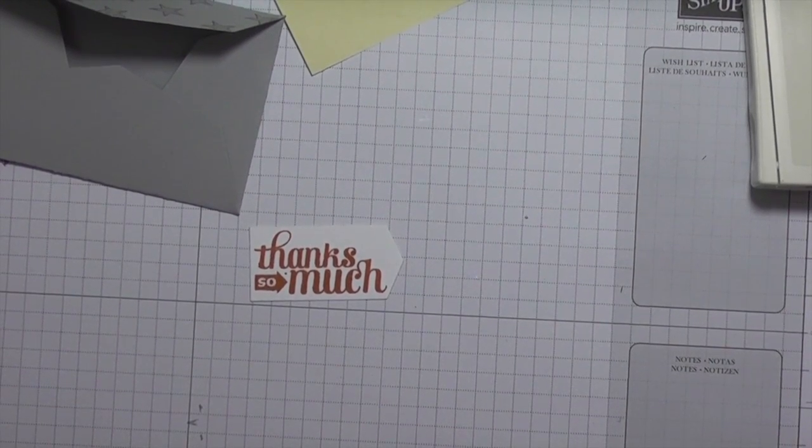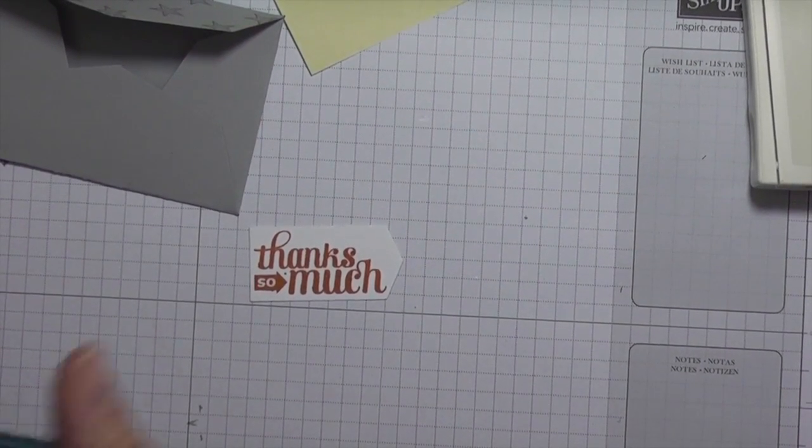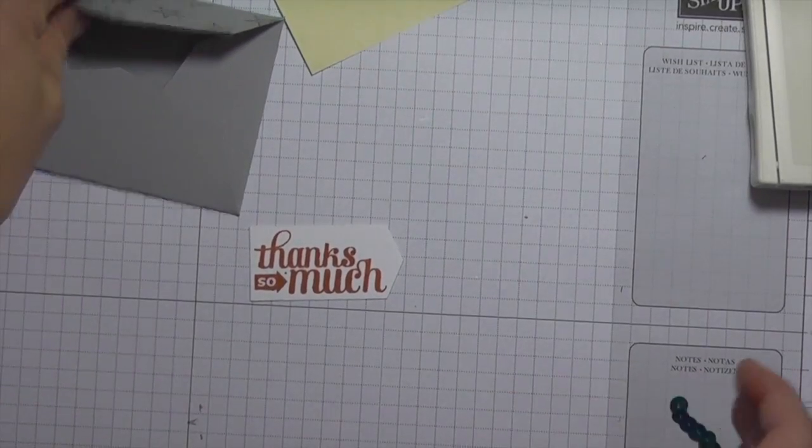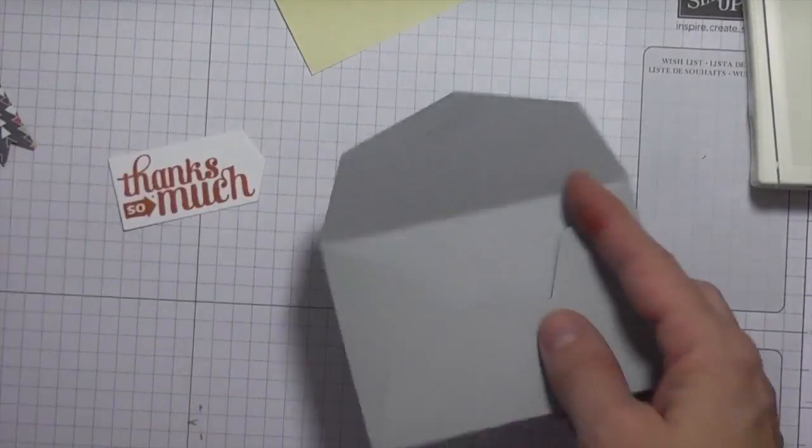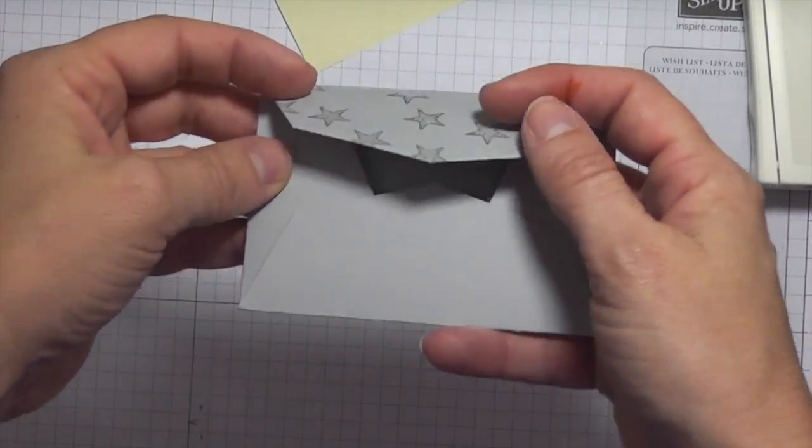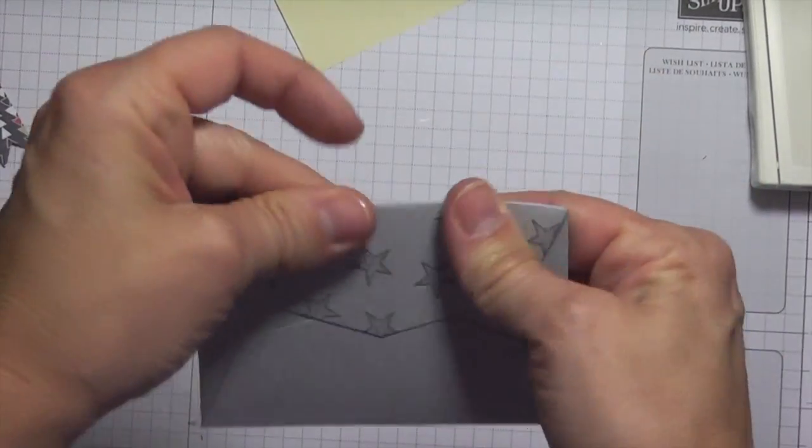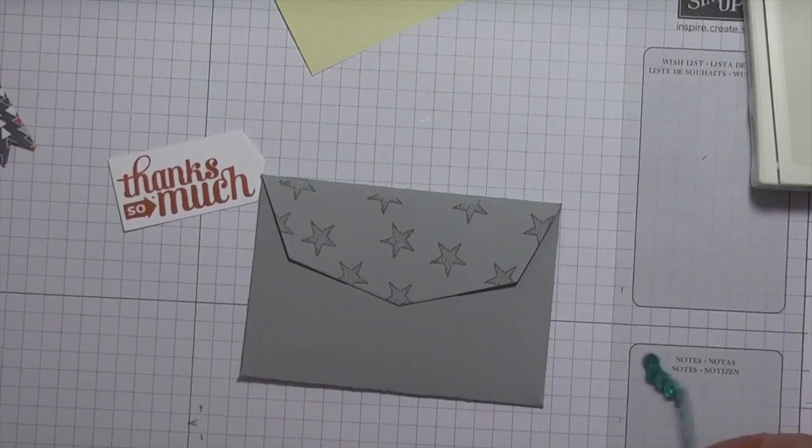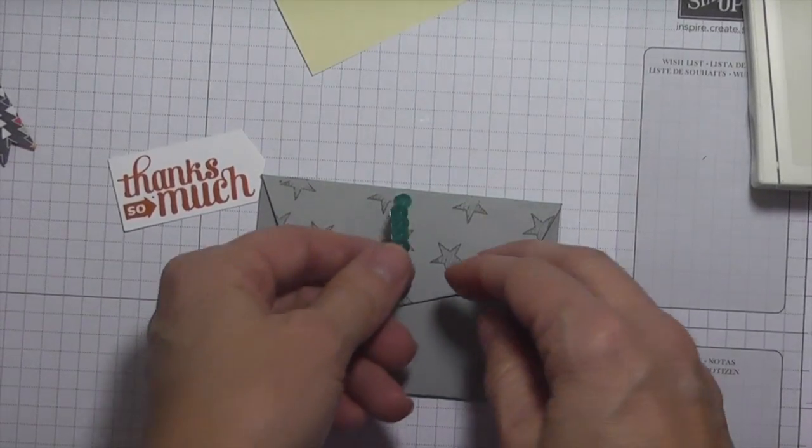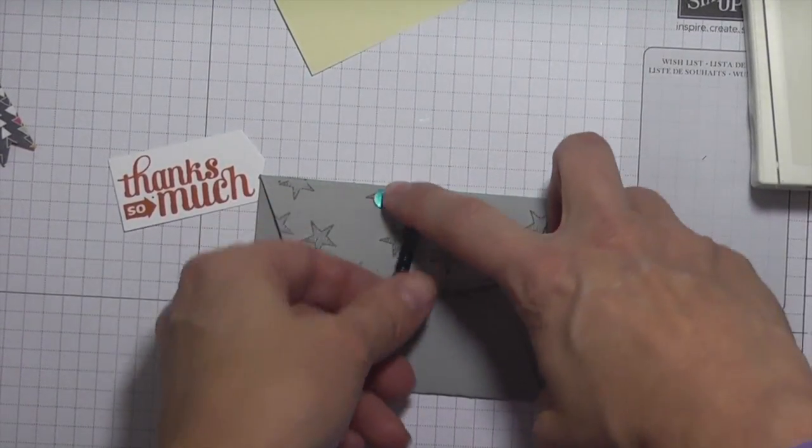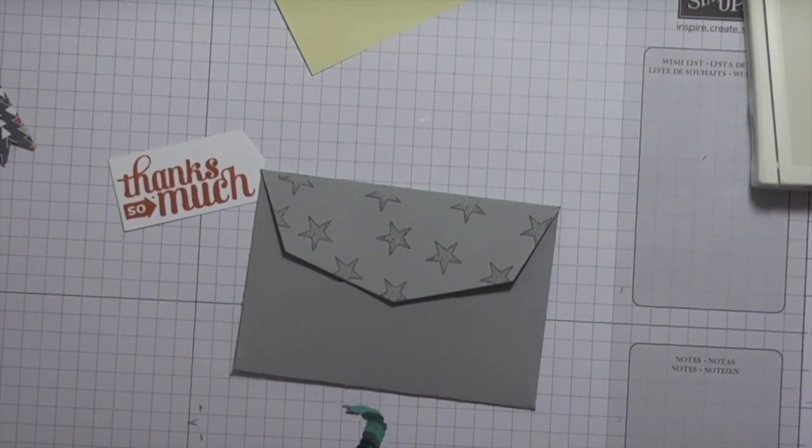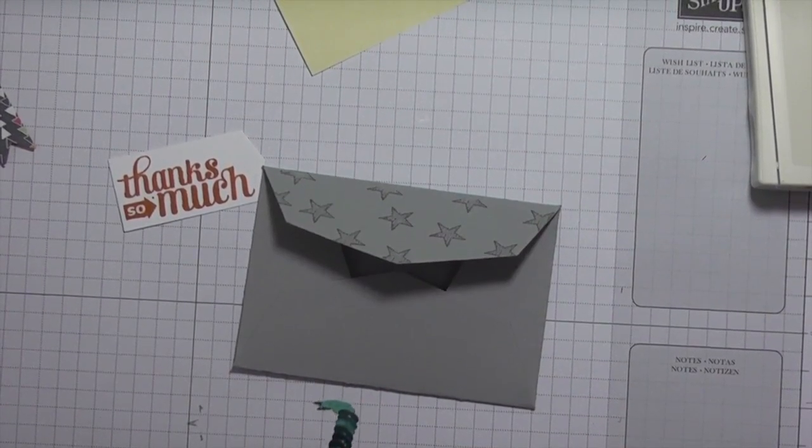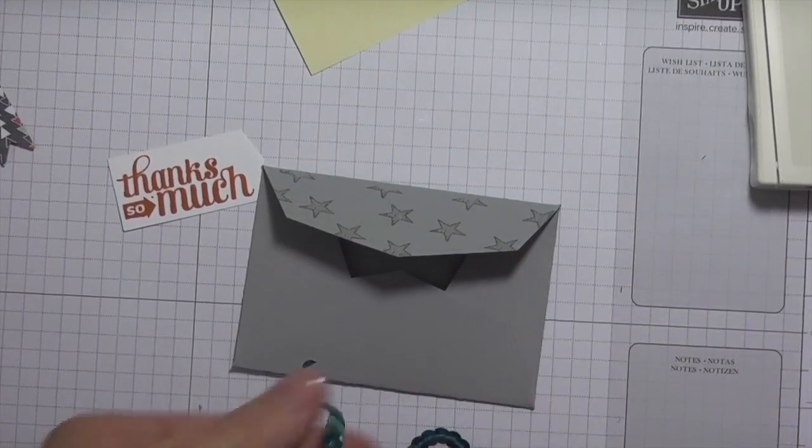What I'm going to do next is get some of the sequin trim. I'm just going to temporarily close it, pretend that there's a gift card in there, and I'm closing that. I'm just going to take the sequin trim and cut enough off where it just goes right on the front of the card or the gift card.